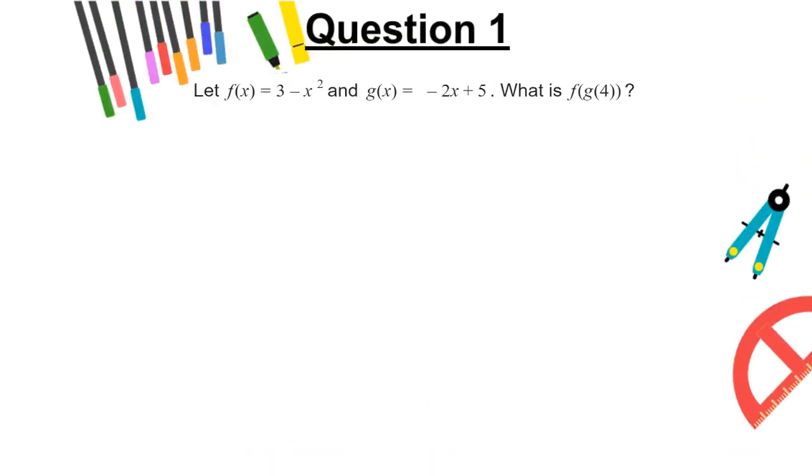Question 1. Let f(x) = 3 - x² and g(x) = -2x + 5. What is f(g(4))? A, -3, B, -13, C, -6, or D, 31?